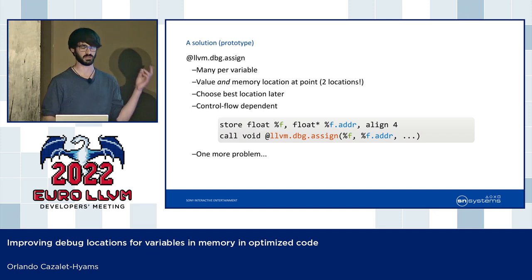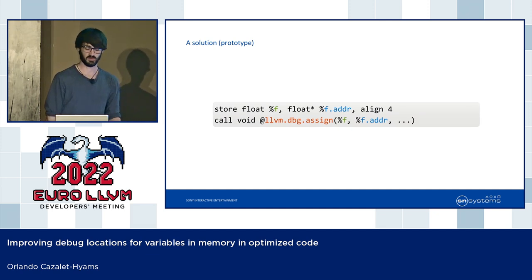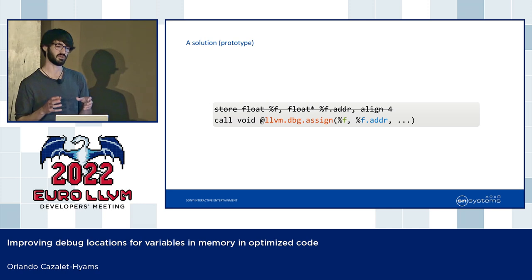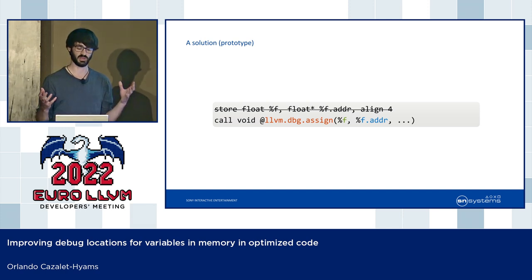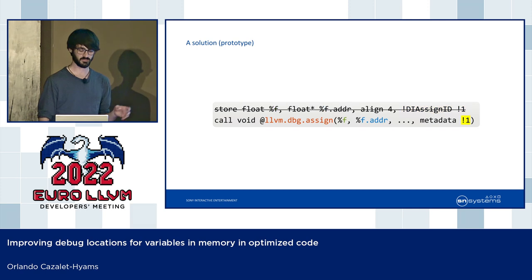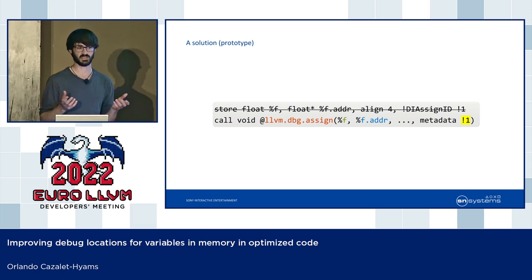There's one more problem: how do we know when the memory location is valid? Given a store and a debug assign that describes the assignment the store is performing, if we delete that store, because the debug intrinsic is only referring to the address — the destination of the store — it's difficult in the general case to automatically record that information. To solve this, I've added a new bit of metadata that you stick on stores, used by the debug intrinsics that describe the assignment the store is performing. That way, when a store is deleted, we automatically get a record of this: looking at a debug assign, you can check whether the metadata it uses is attached to any instruction — and if it's not, then the store has been deleted.